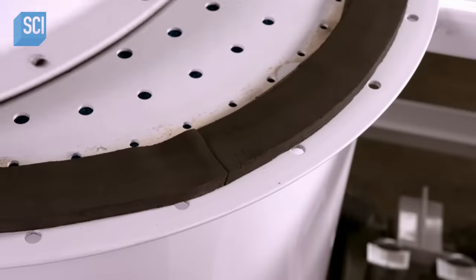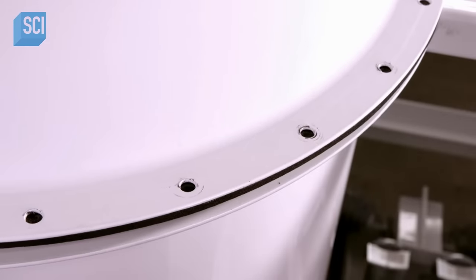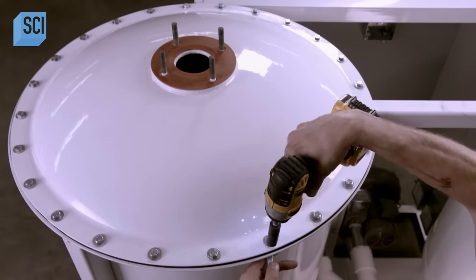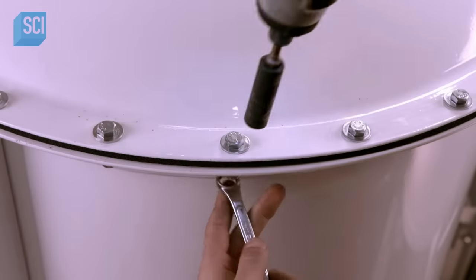This seals the vessel, preventing the air being blown through it from leaking out, and preventing oxygen from getting into the machine, and from there, into the apple storage room.